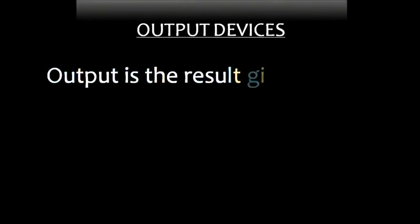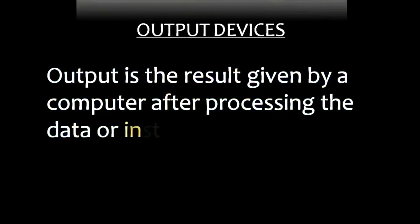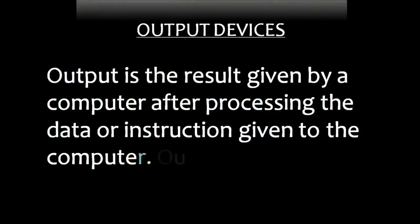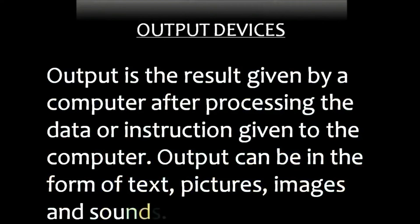Output device: output is a result given by a computer after processing the data or instructions given to it. Output can be in the form of text, pictures, images, and sounds.